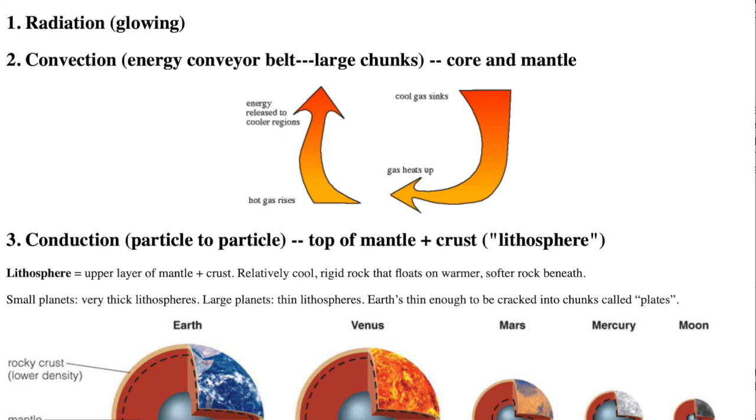Number three, conduction. Is particle by particle where individual particles transfer energy to other individual particles. Conduction occurs very slowly in the crust and the top of the mantle below the crust, and is much faster in the metallic core.